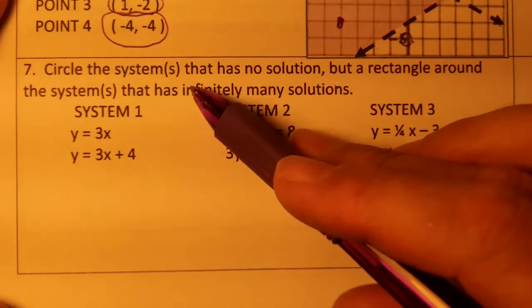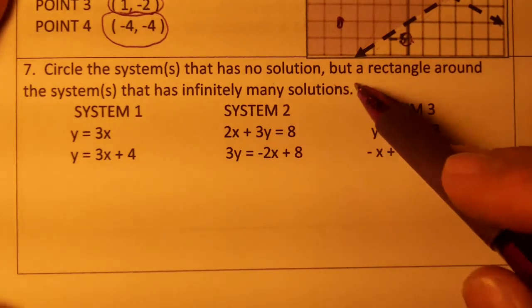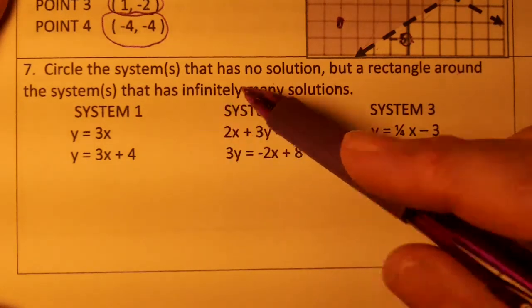Number seven, circle the systems that has no solution, put a rectangle around the system that has infinitely many.